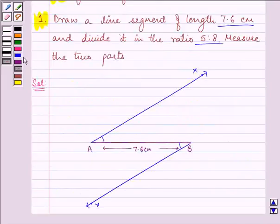So here we draw 5 equal parts: 1, 2, 3, 4, 5. Let's name them A₁, A₂, A₃, A₄, and A₅, where AA₁ equals A₁A₂ equals A₂A₃, and so on. All these sub-parts are equal to each other.